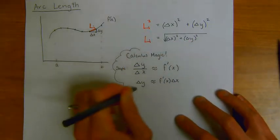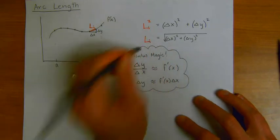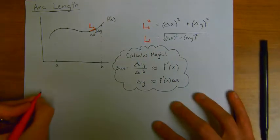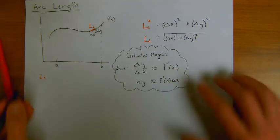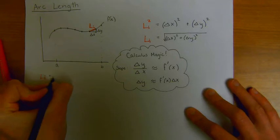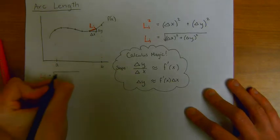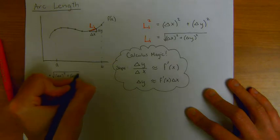So here's my scratch work for calculus magic. And let's continue on with our formula for L sub i. So L sub i, we see, is equal to the square root of delta x squared plus delta y squared.